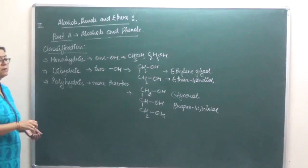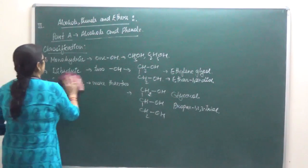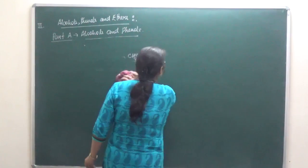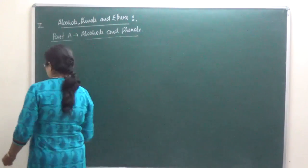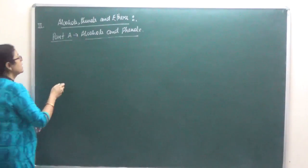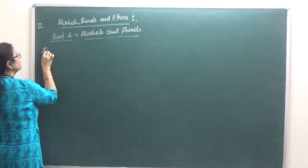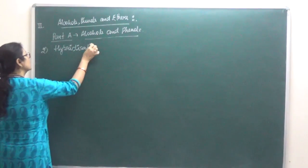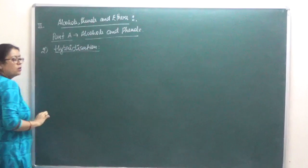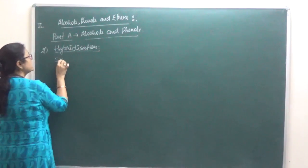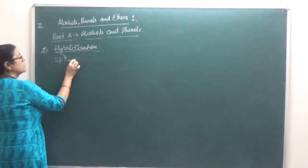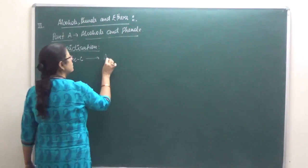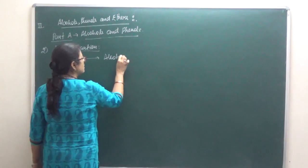Second classification is based on hybridization. This we have already done. When SP3 hybridized carbon, which carbon? Alpha. If alpha carbon is SP3 hybridized, in that case, we will have alcohols.